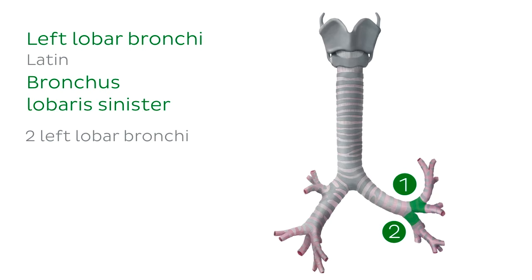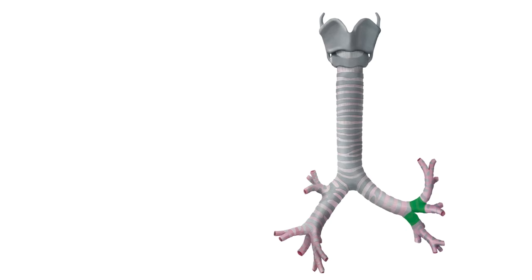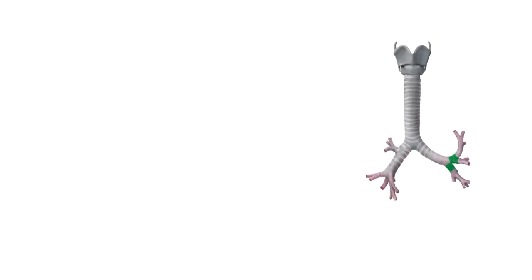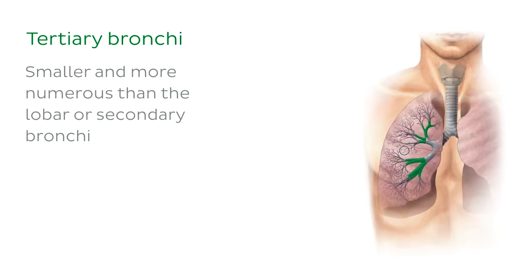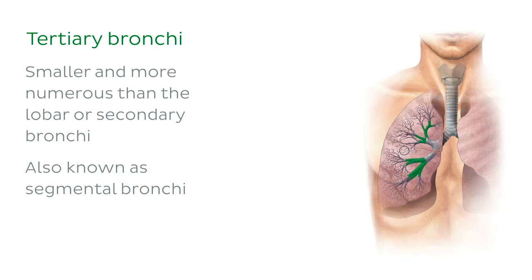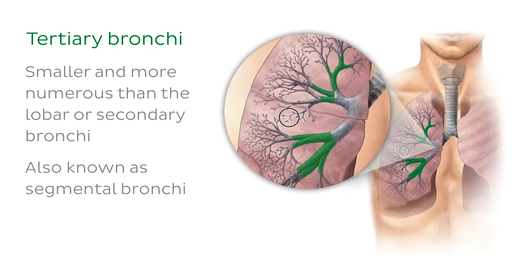The lobar bronchi further divide into even smaller air passageways — tertiary bronchi — which we will look at next. These are smaller and more numerous than the lobar or secondary bronchi and travel to the segments of each lobe of the lungs. Due to this, they're also called segmental bronchi. Looking more closely at this zoomed-in part of the image, you can see segmental bronchi in the right lung, highlighted in green.